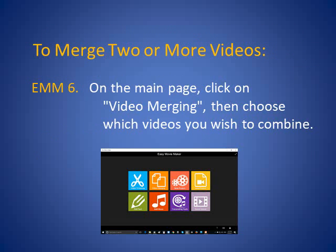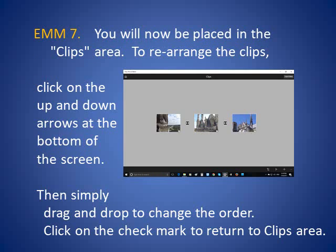To merge two or more videos, on the main page click on Video Merging, then choose which videos you wish to combine. You will now be placed in the Clips area. To rearrange the clips, click on the up and down arrows at the bottom right-hand of the screen, then simply drag and drop to change the order. Click on the check mark to return to the Clips area.